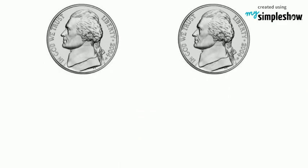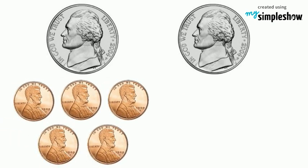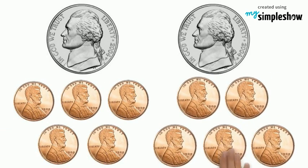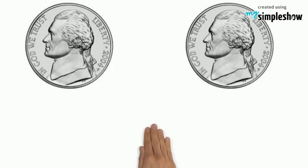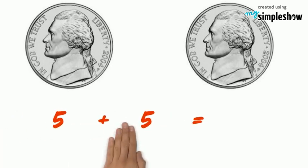Now look at these two nickels. Let's see if we can find out how much is the total. One nickel is like having five pennies. Another nickel is another five pennies. So two nickels is worth ten cents. Let's count them — five and five more makes ten.